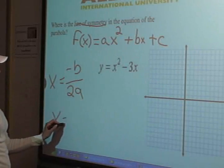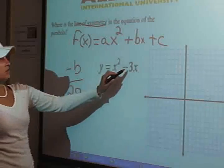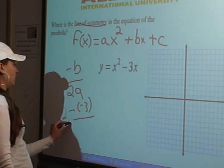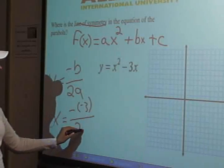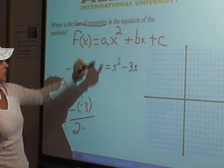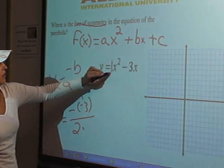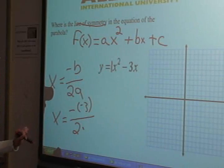So we're going to do x equals negative b which is negative 3 over 2 times a. Here's our x squared and we don't really have an actual number here. So we know that this is a 1 because that's the coefficient of the variable.